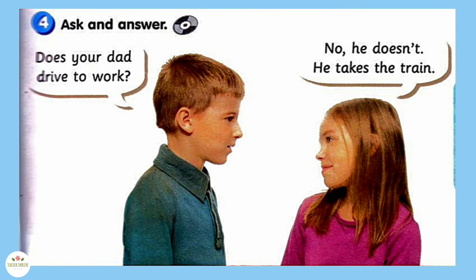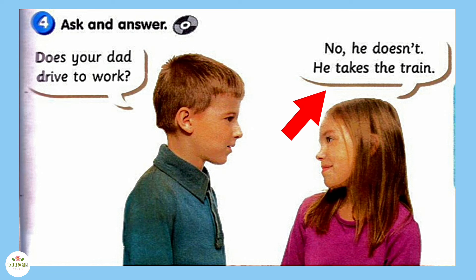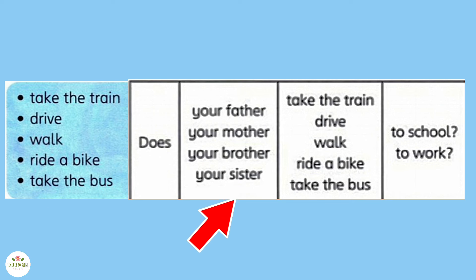Activity 4: Ask and Answer. In this picture, Tony is asking Sue about what means of transport the members of her family use. Listen. Does your dad drive to work? No, he doesn't. He takes the train. Listen again and repeat. Does your dad drive to work? No, he doesn't. He takes the train. Work in pairs. Take turns to ask and answer with your friend. Use the key phrases below. You may refer to the table below to help you.